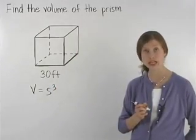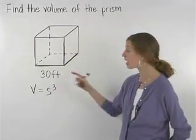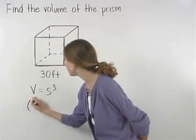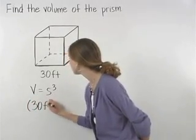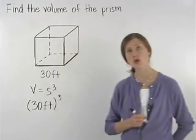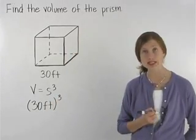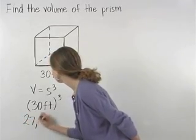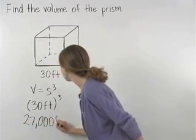In the cube shown here, notice that we have a side length of 30 feet. So plugging into the formula, we have 30 feet cubed, or 30 feet times 30 feet times 30 feet, which is 27,000 feet cubed.